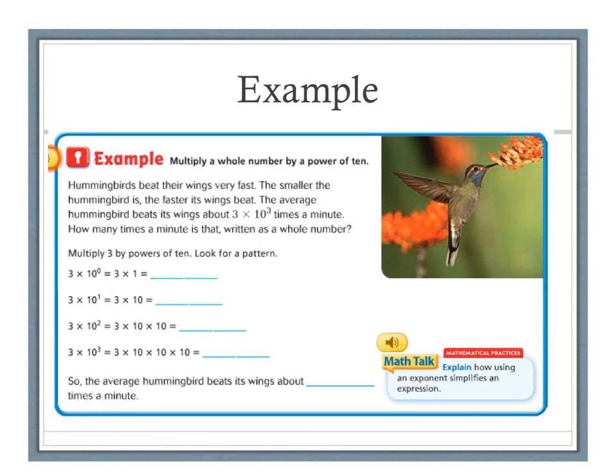Well, we can look at the powers of 10 and look at a pattern. 3 times 10 to the 0 power is just like 3 times 1. The value would be 3. 3 times 10 to the 1st power is like 3 times 10. The value is 30.